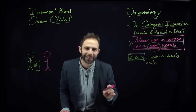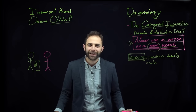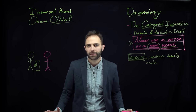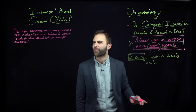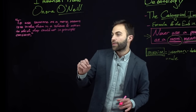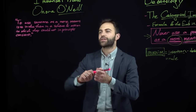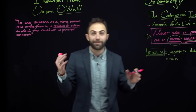The problem is when you use a person as a mere means — you use them only as a means. Here's what O'Neill says it is: to use someone as a mere means is to involve them in a scheme of action to which they could not, in principle, consent. Think about the bank teller example. The scheme of action — O'Neill simply means maxim here — is a type of interaction that both people could agree to.